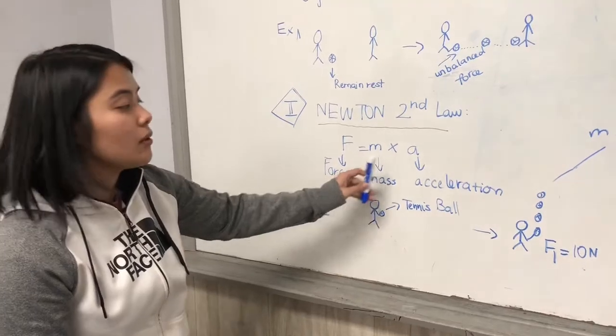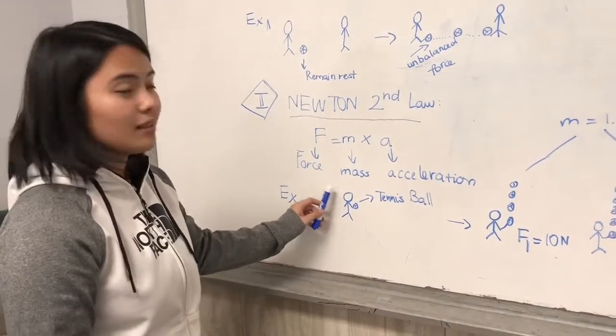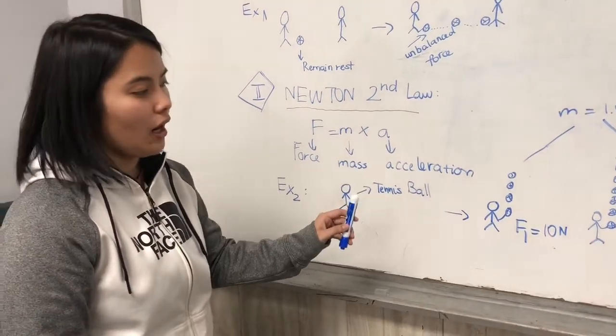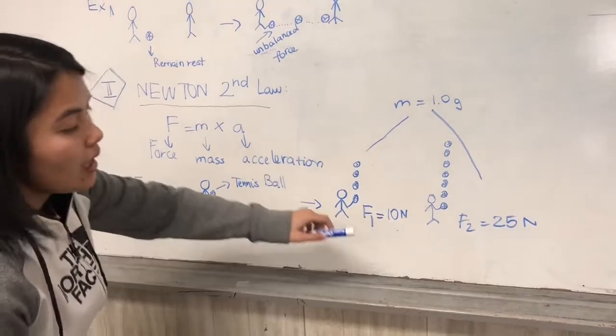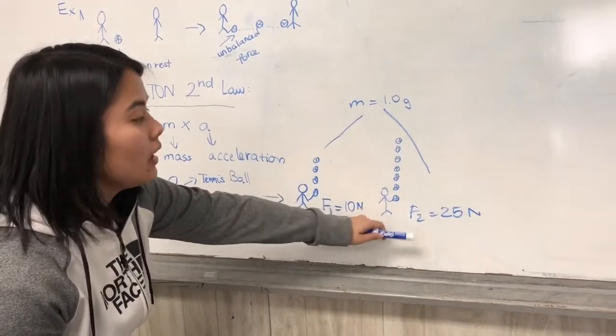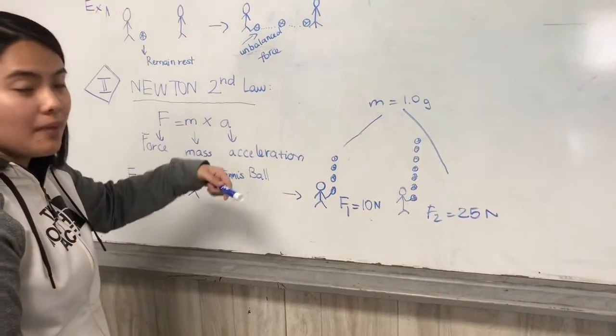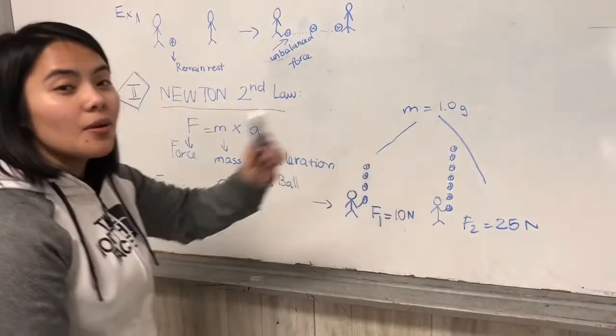In this example, I will use different forces with the same mass to compare different accelerations. Here is Kalina with her tennis ball. She will give two tries. The first time she will give a force of 10 Newtons, and the second time she will use 25 Newtons.